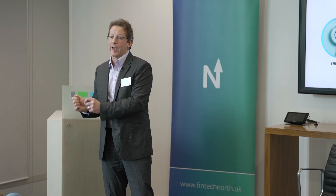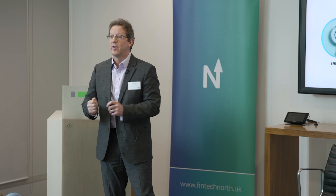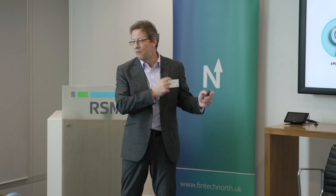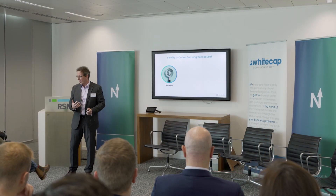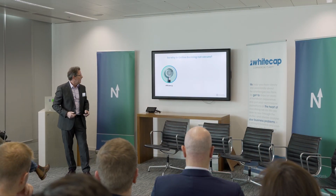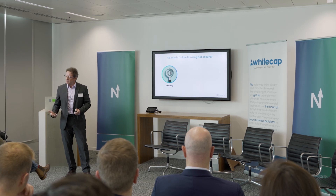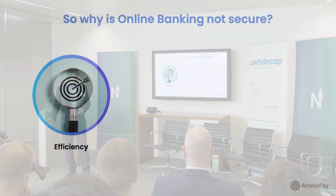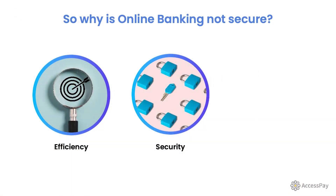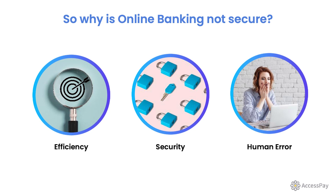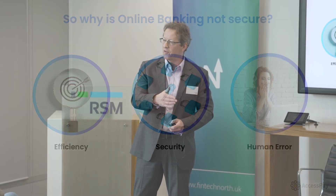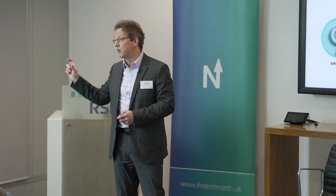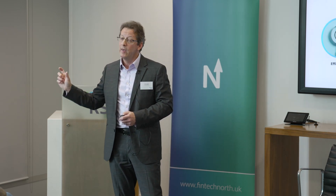But if this is your business's bank account, then obviously that's starting to become less secure. It's an efficiency issue because Tom is logging in and making those payments, it's a security issue, and also it's a human error issue — because Tom may not be feeling very well today, so he may have put the decimal point in the wrong place, or put the sort code and account number in the wrong way. That's where those issues come in.